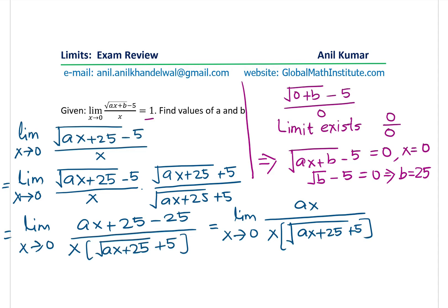So now we can cancel the x terms. And that was the whole idea. So do you understand why we did so? So that makes sense. And now we can substitute 0 for x and find our solution. So we get this answer as a over square root of 25 plus 5, which is a over 10.